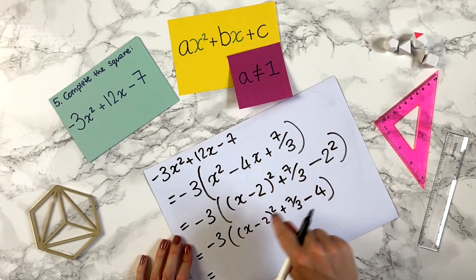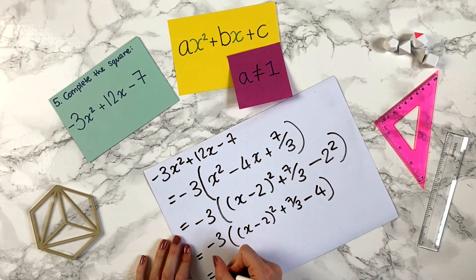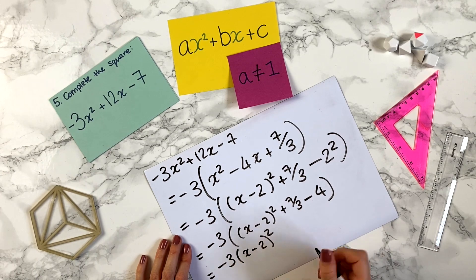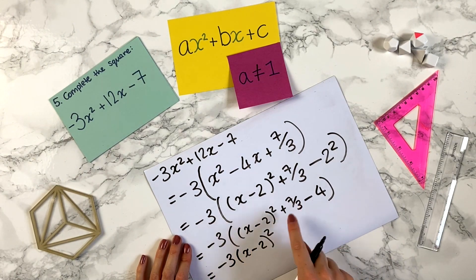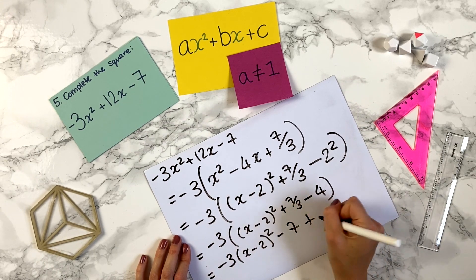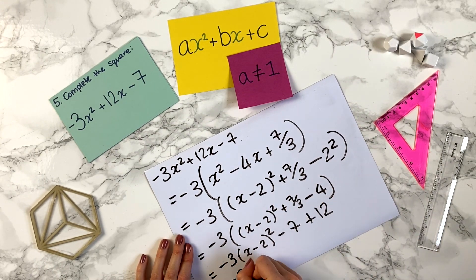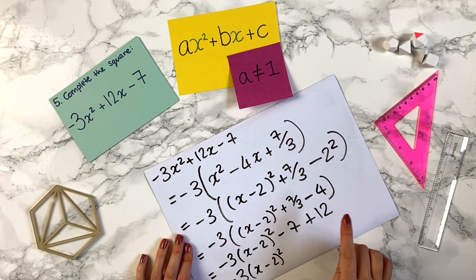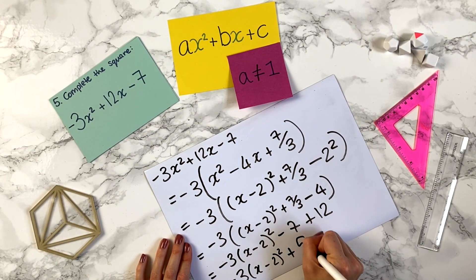So if we expand these brackets times everything by minus 3, so we get minus 3 times x minus 2 squared, minus 3 times plus 7 over 3 will give us minus 7, plus 12 is going to give us plus 5.